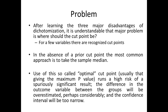After learning the three major disadvantages of dichotomization, the major problem is where to cut the data. For a few variables there are recognized cut points; in the absence of a prior cut point, the most common approach is to take the sample median. However, use of an so-called optimal cut point that gives the maximum p-value runs a high risk of a spuriously significant result — the difference between groups will be overestimated and the confidence interval will be too narrow.